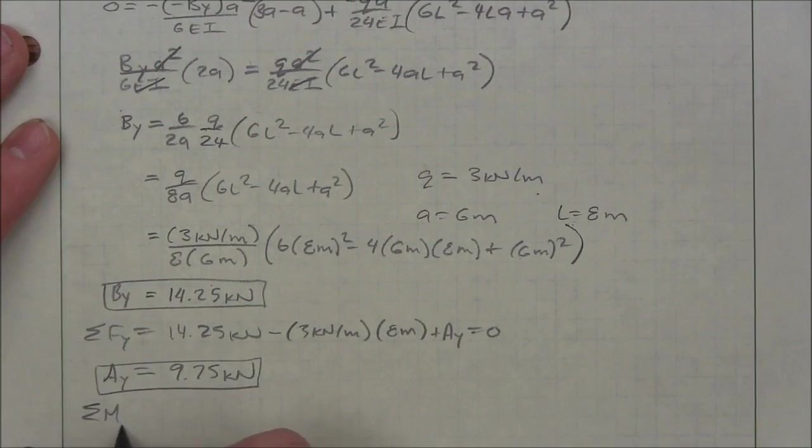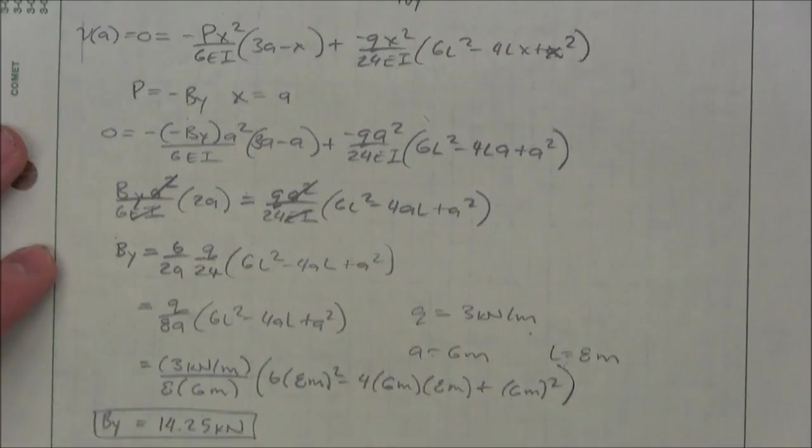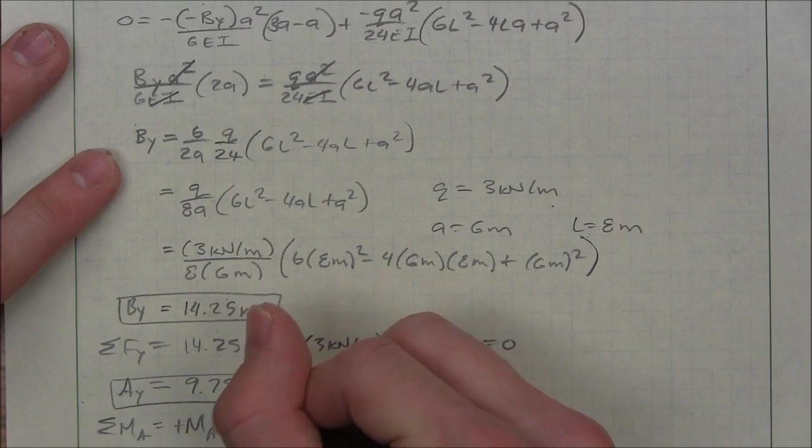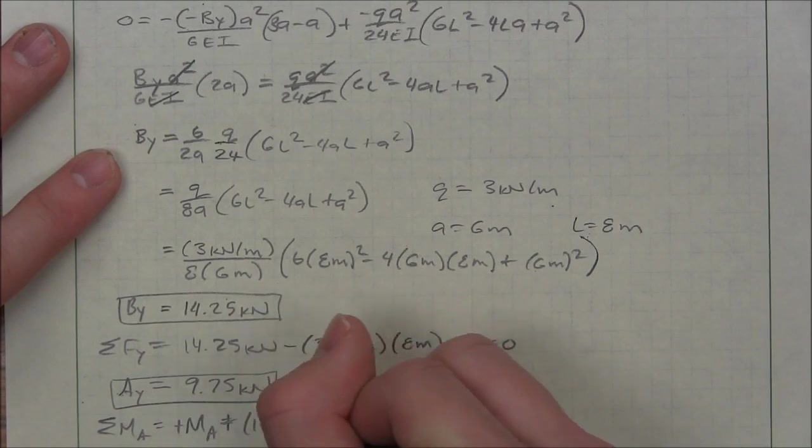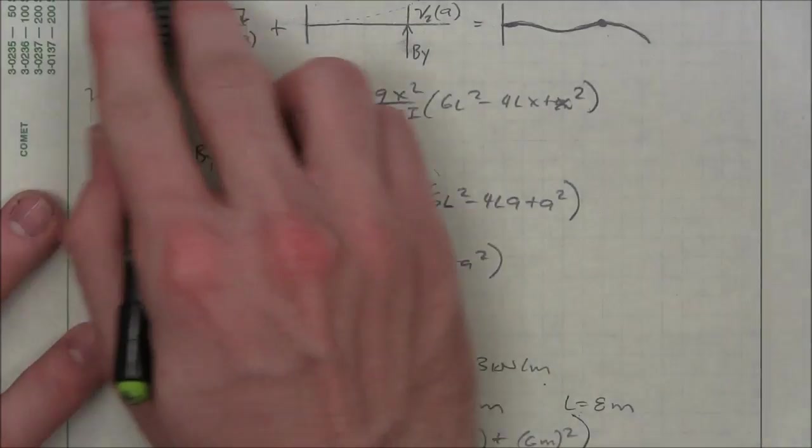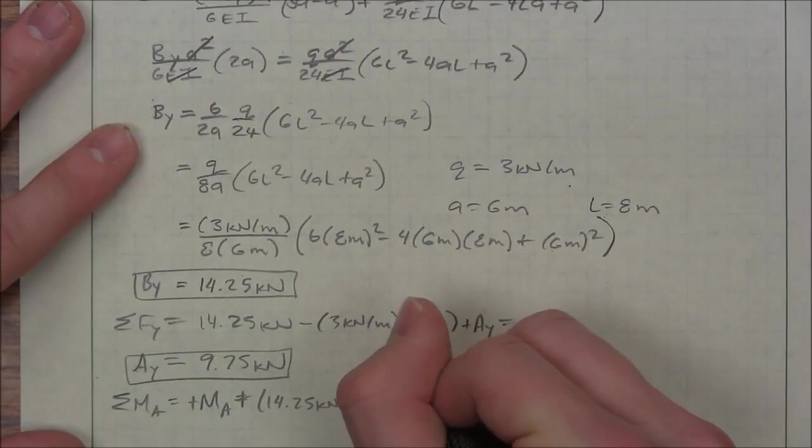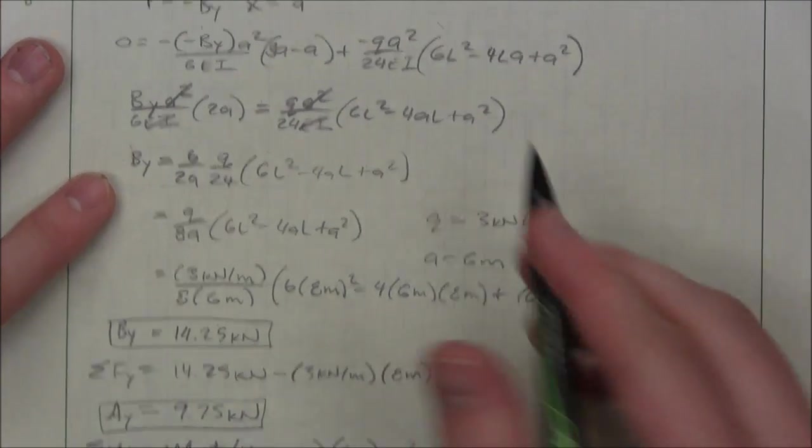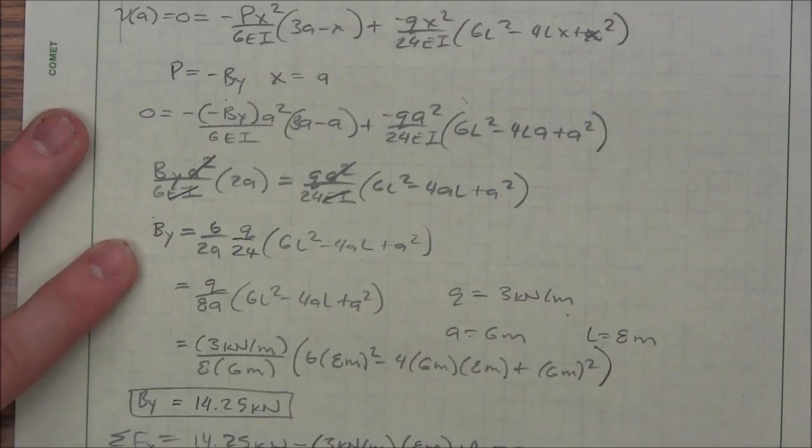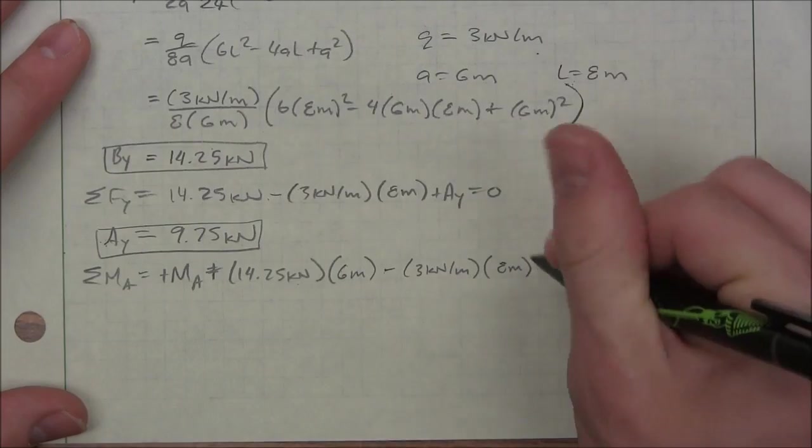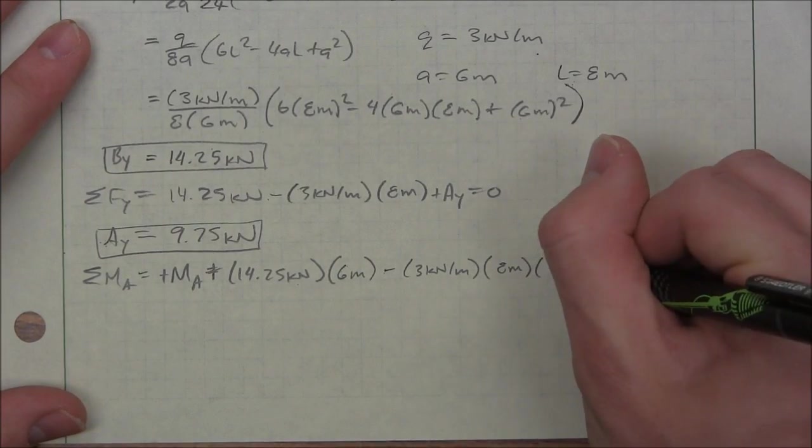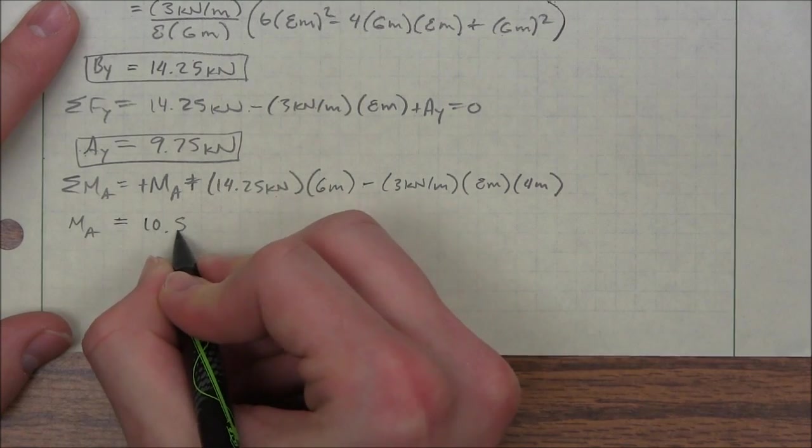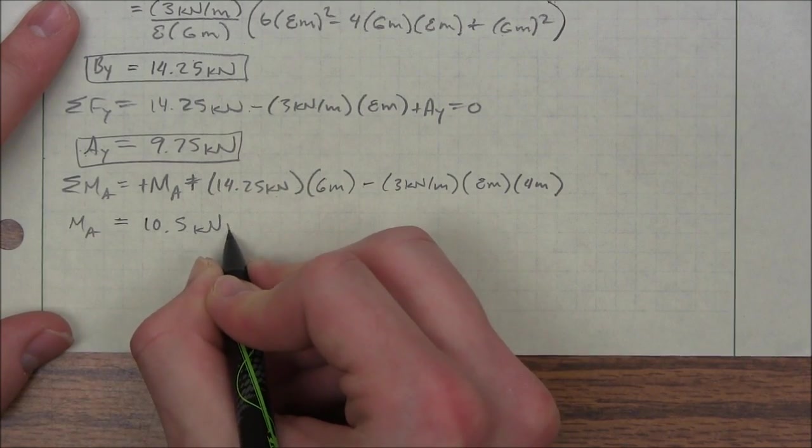And I'll sum the forces, or some of the moments at A, so I can find MA. Plus my BY times the moment arm of A, which was 6 meters. And then I have to subtract the moment from my distributed load. So that's multiplied by the area it's applied and its moment arm. And I have my moment arm is half the length. And that tells me that MA equals 10.5 kilonewton meters.